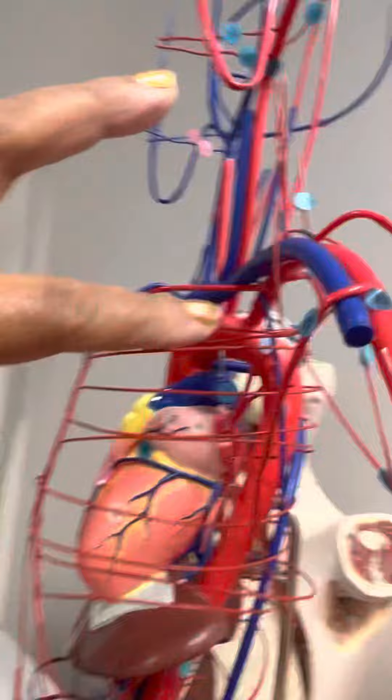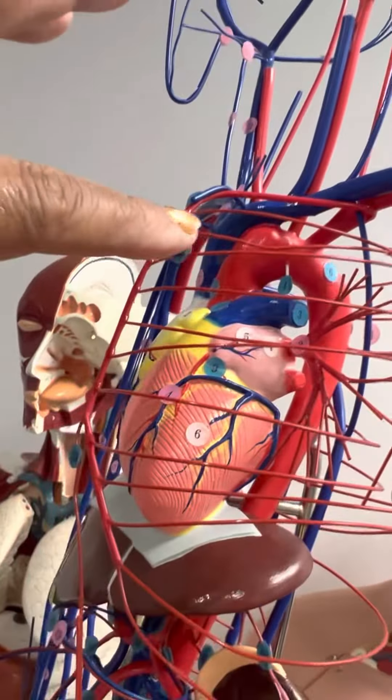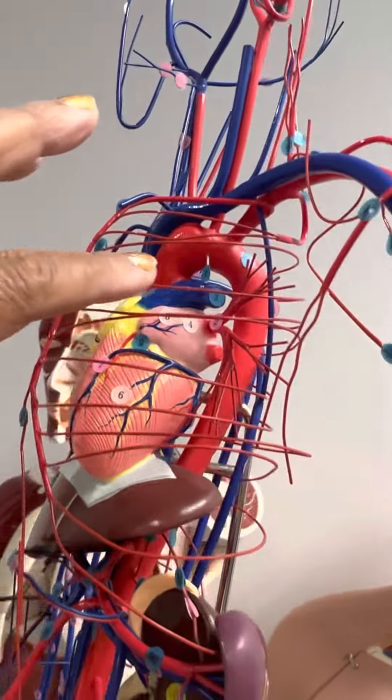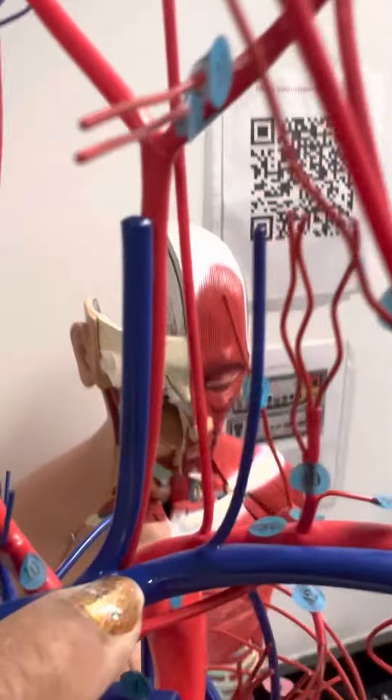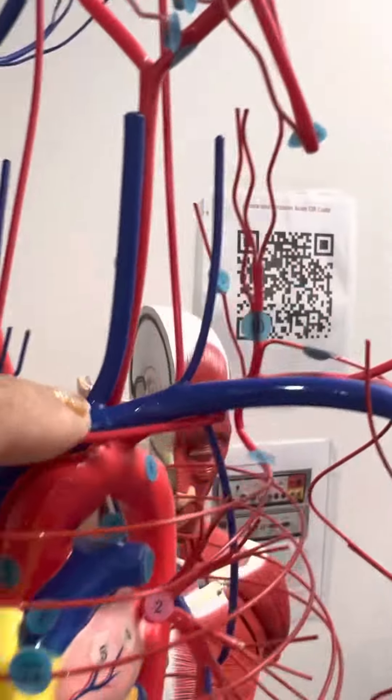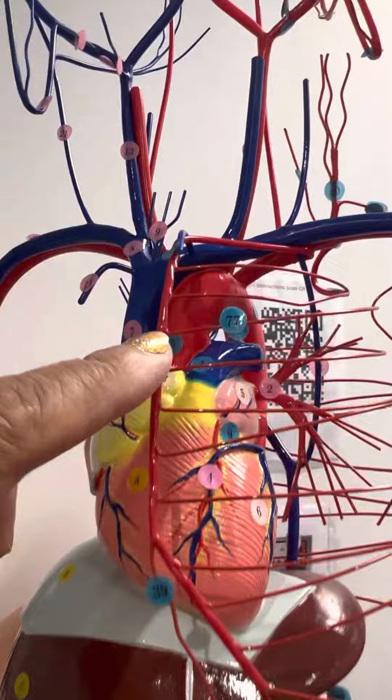So it has a branch here that's going to come around and feed into these. And then you have going down here from the subclavian, you have the internal mammary.